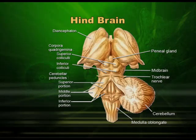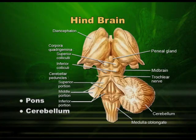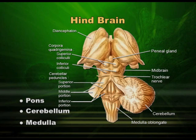The hindbrain has parts like pons, cerebellum, and medulla. Pons is just below the midbrain. When we come to cerebellum, you can see in this diagram — it has come to one side to increase the surface area and accommodate more nerve cells. It continues further in the lower part of the brain, and after the hindbrain comes the spinal cord.